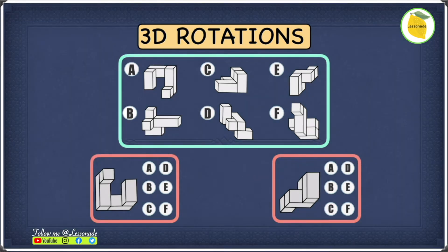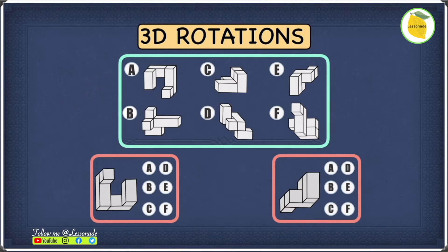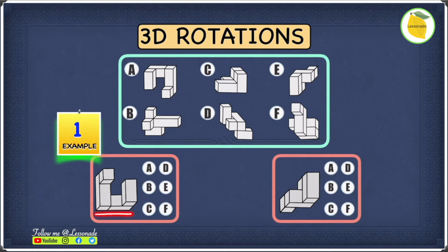Now let's have a look at the 3D rotation example. In this example, what we have to do is find which one of these shapes inside the box has been rotated to form the two new 3D figures. We have example one and example two, so let's start with example one first. The thing to notice with this 3D figure is that we have three cuboids — a cuboid here, a cuboid here, and a thinner cuboid at the top. If we find an option that does not contain three cuboids, then we cross that option off.